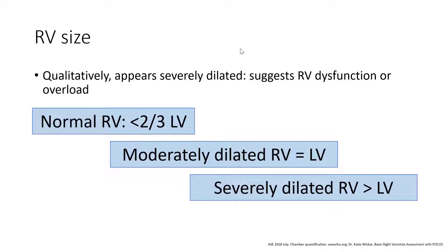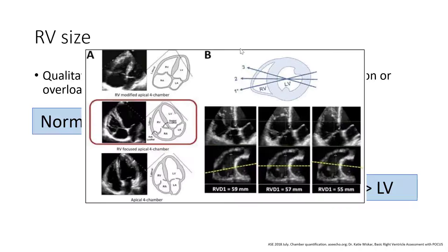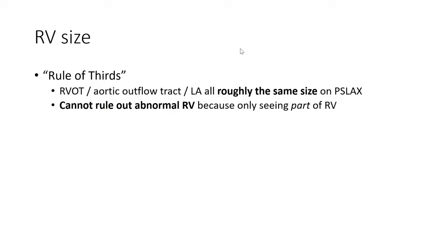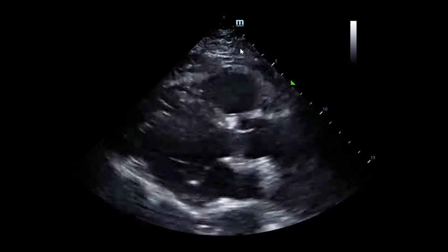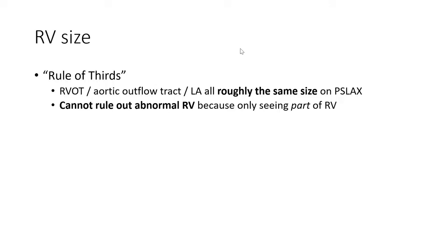Some helpful rough parameters: a normal RV is generally less than two-thirds the size of the LV; a moderately dilated RV is roughly equal in size to the LV; and a severely dilated RV is greater than the LV. There are pitfalls when using the apical four-chamber view, as RV size can appear different depending on probe position. Looking back at the parasternal long axis, we can apply the rule of thirds: the right ventricular outflow tract, the aortic outflow tract, and the left atrium should all be roughly the same size. It was less apparent in our case that the RVOT was grossly enlarged, underscoring that you cannot rule out an abnormal RV using this tool alone, as you're only seeing part of the right ventricle.